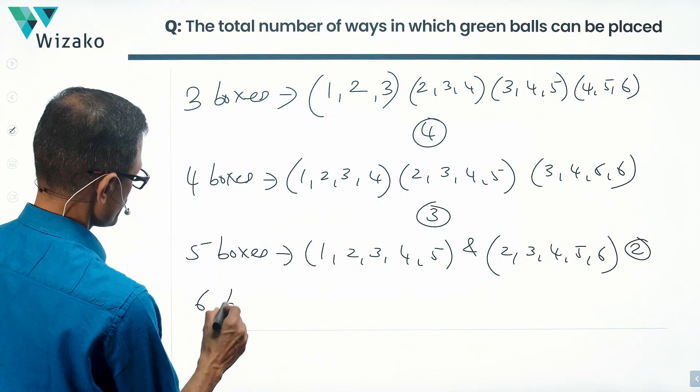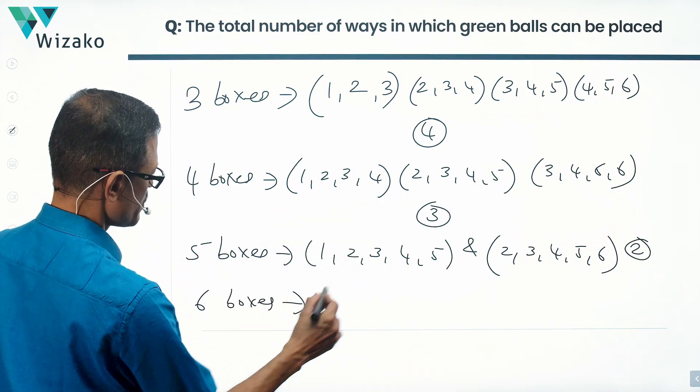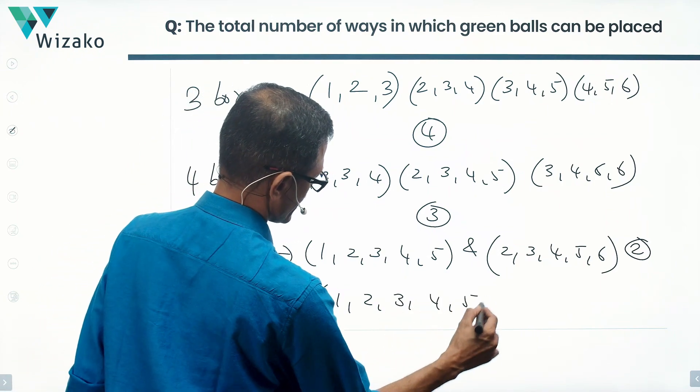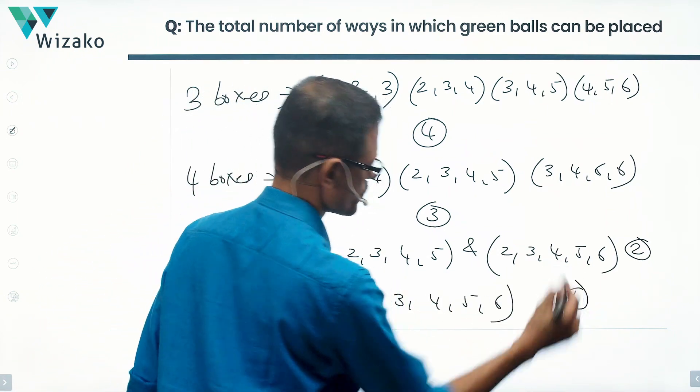Lastly, all 6 boxes contain green. That's only one possibility. 1, 2, 3, 4, 5, 6. They're consecutively numbered. One such possibility.